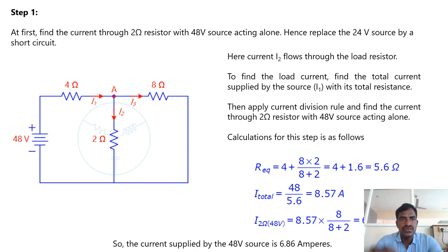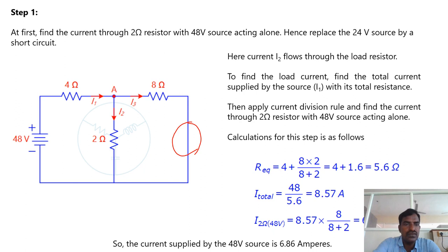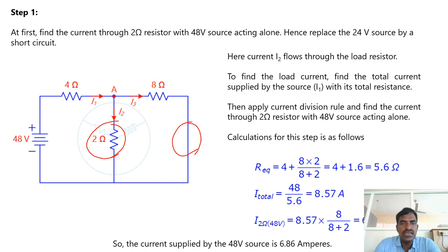Coming to the first step: find the current through the 2 ohm resistor with the 48 volt source acting alone. Hence, replace the 24 volt source by a short circuit. Now the 48 volt source is applied and the 24 volt source is short-circuited. To find the current through the 2 ohm resistor, let us assume I2 as the current through the 2 ohm resistor, I1 as the current through the 4 ohm resistor, and I3 as the current through the 8 ohm resistor. Apply the current division rule to find the current through the 2 ohm resistor with the 48 volt source acting alone.